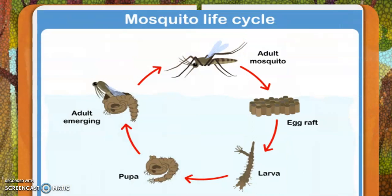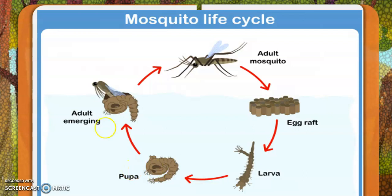Now, let us understand the life cycle of a mosquito. An adult mosquito lays a lot of eggs. It then forms into larva — larva is singular, dear children. This larva then grows up into pupa, and pupa is the outer layer from which an adult mosquito comes out. And the cycle keeps going on.